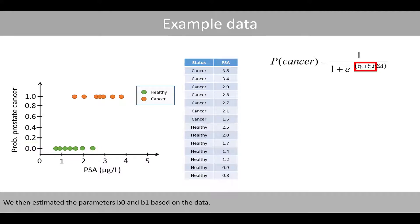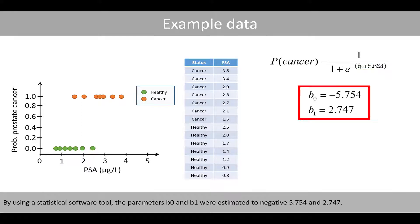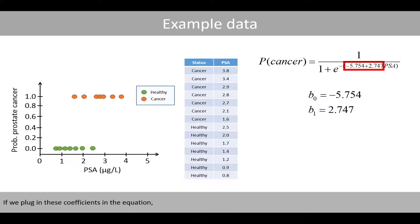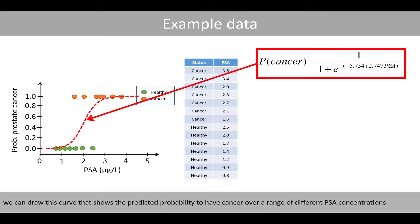We then estimated the parameters B0 and B1 based on the data. By using a statistical software tool, the parameters B0 and B1 were estimated to negative 5.754 and 2.747. If we plug in these coefficients in the equation, we can draw a curve that shows the predicted probability of having cancer over a range of different PSA concentrations.